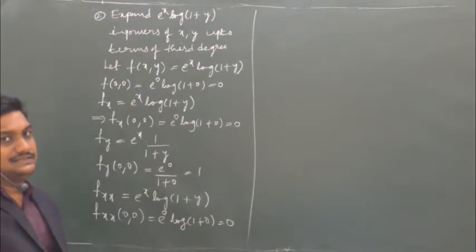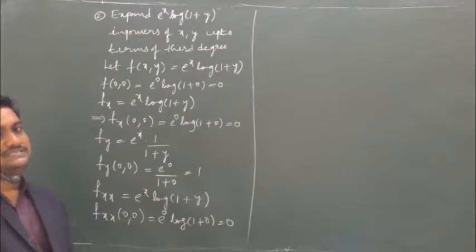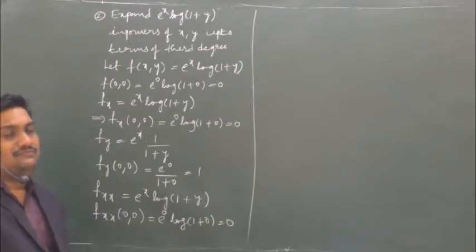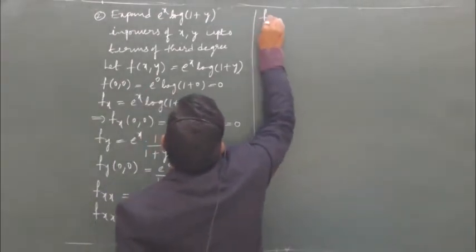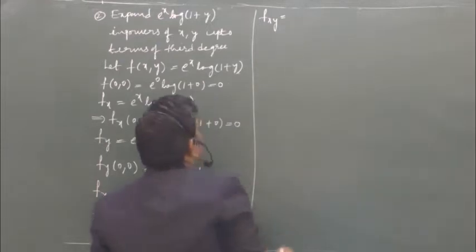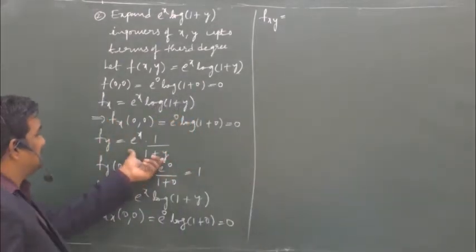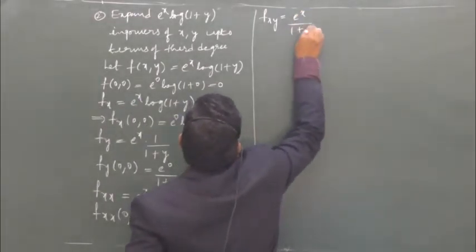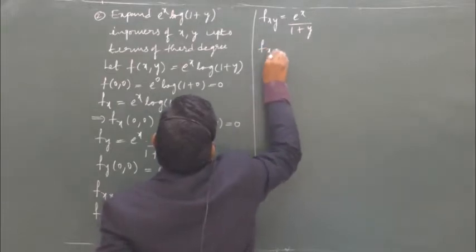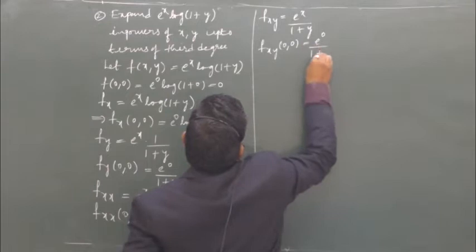The next term is 2 · x · y · fxy at (0,0). Here a = 0, b = 0. Let us find fxy, which is the derivative of fy with respect to x. This gives e^x/(1+y). Now fxy at (0,0) is e^0/(1+0) = 1.